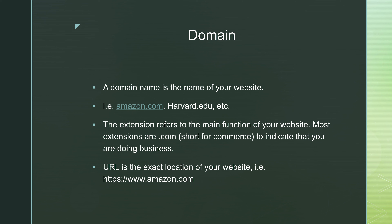If you notice, there are different extensions on a website address. It says amazon.com — the .com is short for commerce, and that's the most common extension, indicating you're doing business. EDU indicates an educational university, and .org is for organization. So depending on what type of website you're building, that may determine your extension. Lastly, you have the URL — the Uniform Resource Locator — which is the address of your site, the exact location you'd type into a browser to find the content you're looking for.